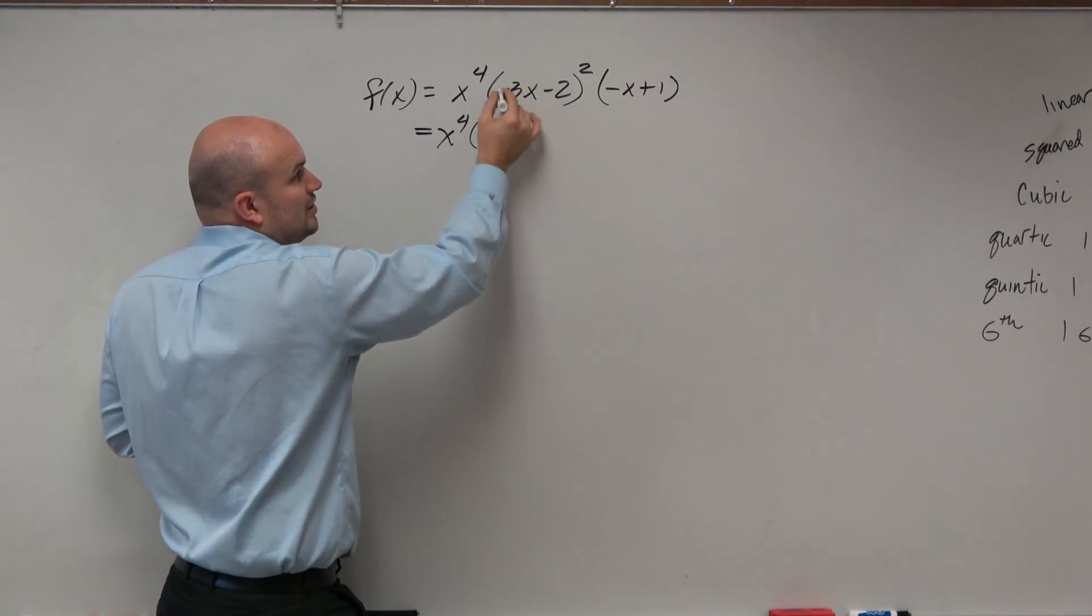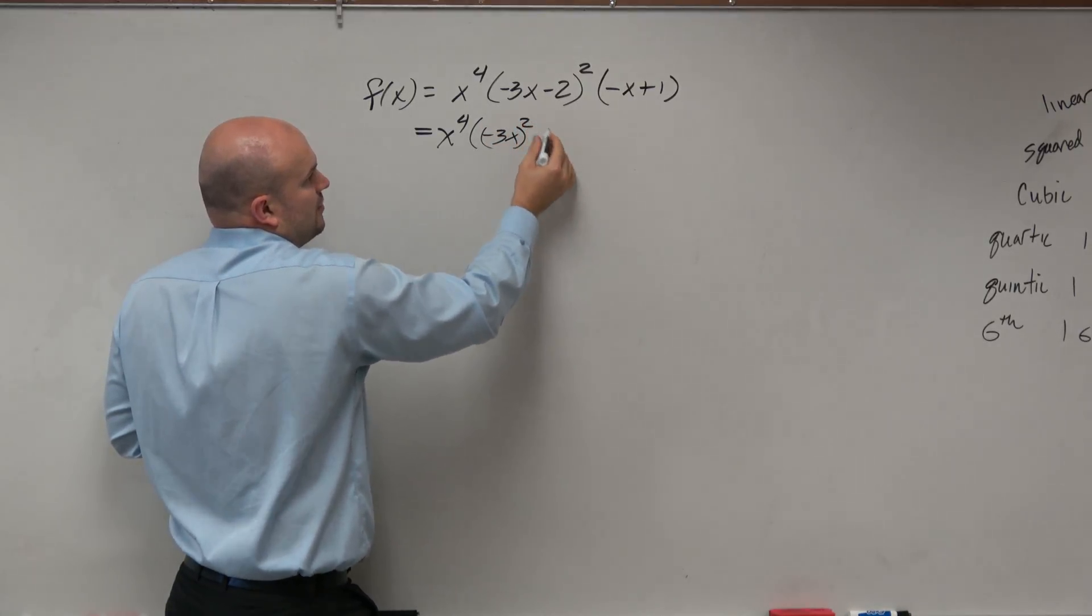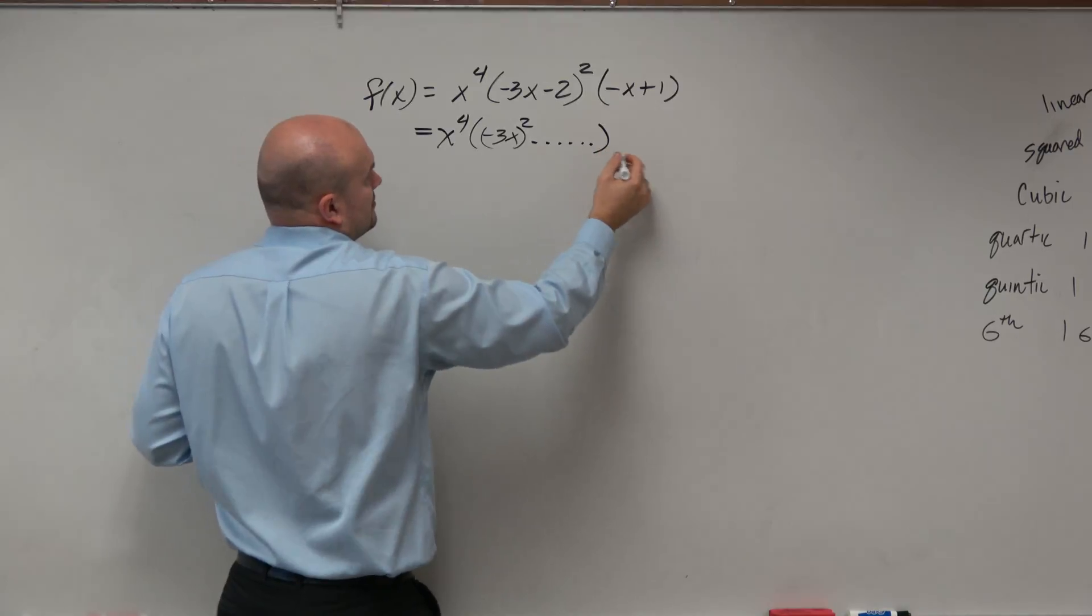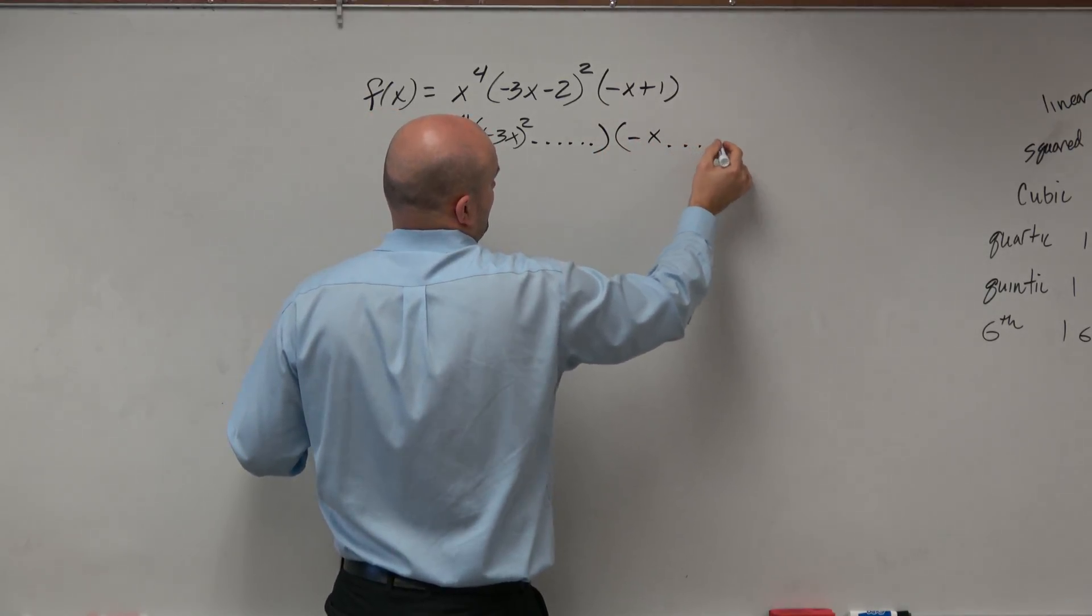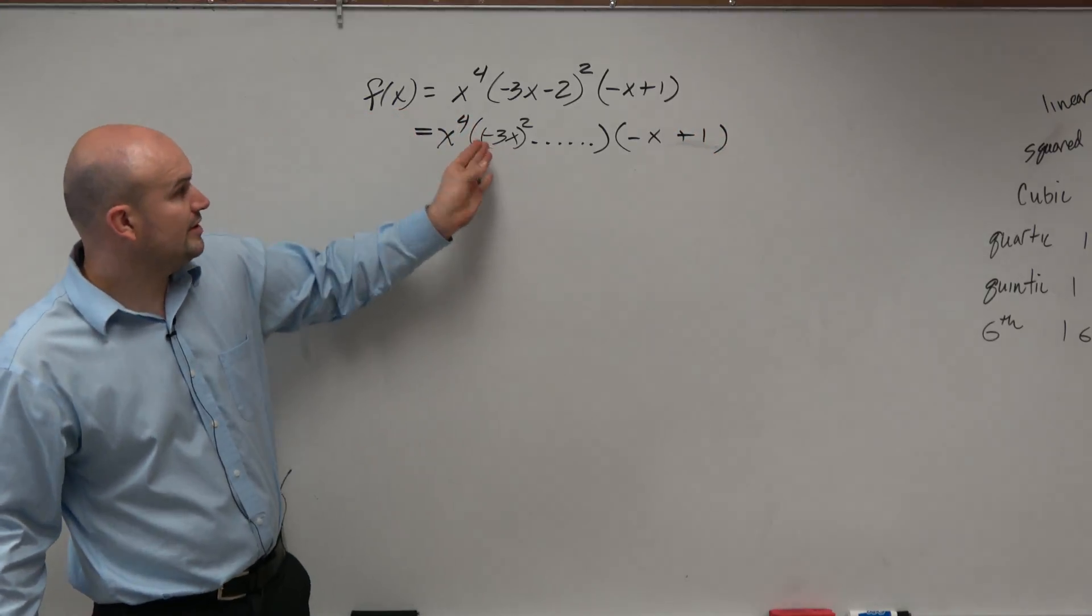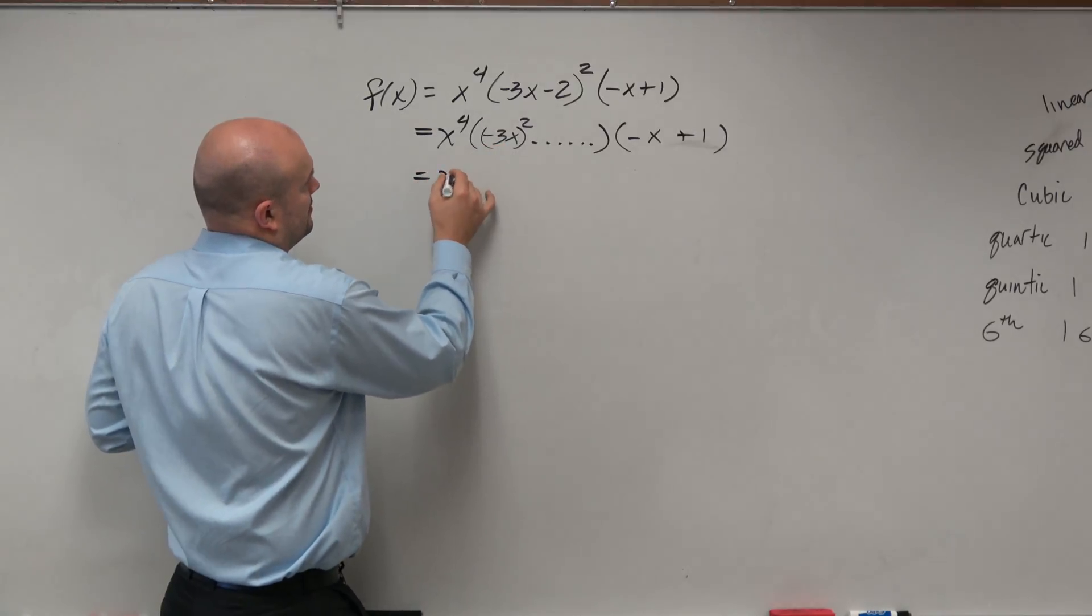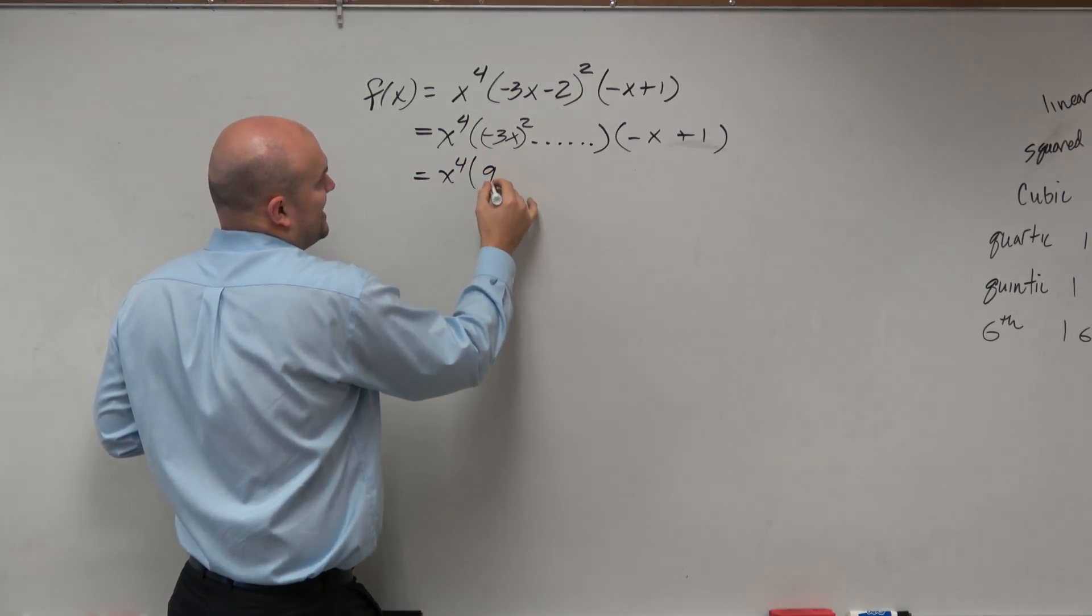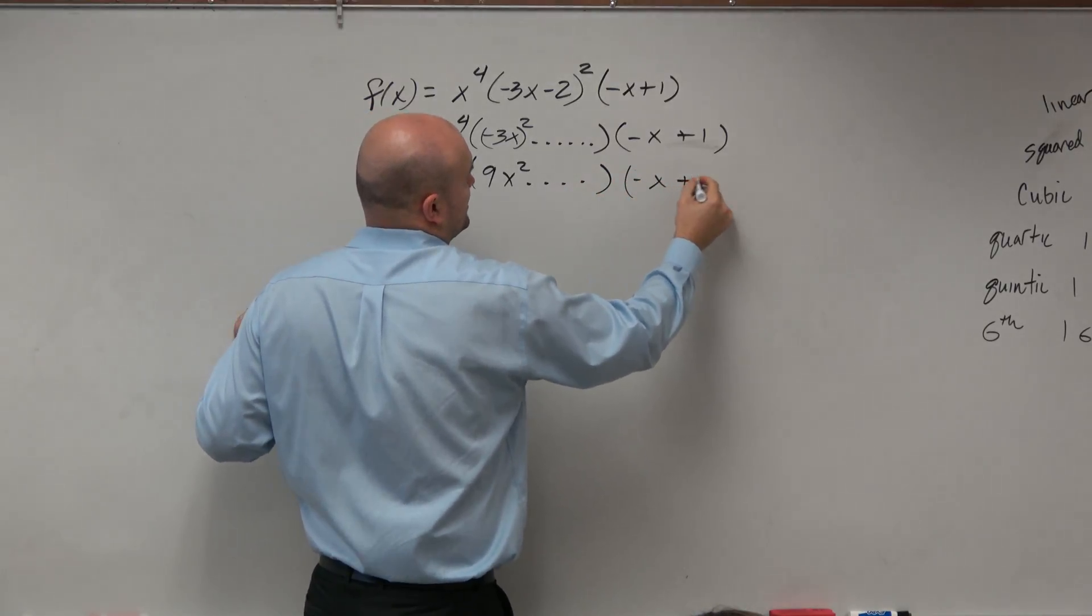In reality, we know that the highest power here is going to be negative 3x squared. Would you guys agree? We know the highest power there is negative 3x squared. So negative 3x squared squared is going to be 9x squared. And then we have negative x plus 1.